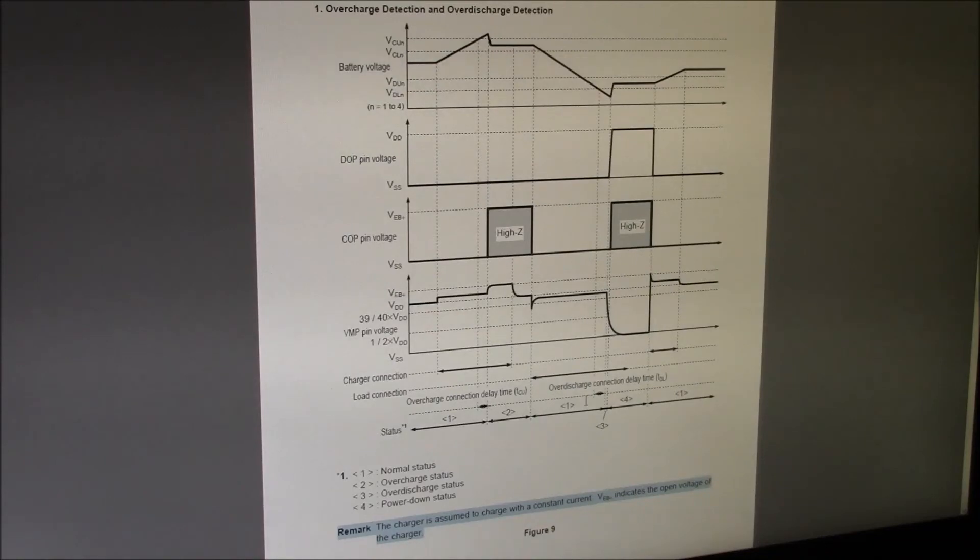State three is when it's over discharged. And then state four, there's a little time delay built in. You can see the over discharge delay time. You set that with the capacitor. And then the chip powers down once the battery's over discharged. Then it powers down and waits to be charged again.